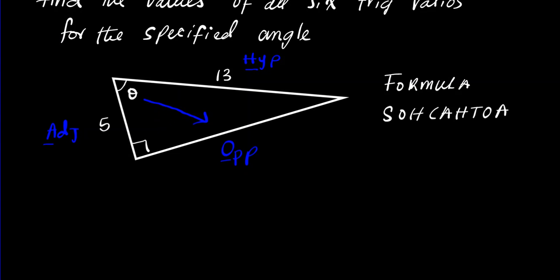Now in order for us to find all 6 trig ratios we need to have the measures of all 3 sides. If you take a look at the triangle we know the hypotenuse and the adjacent, but we're missing the opposite. So we need to determine what the opposite is before we can proceed. We're going to find the opposite.